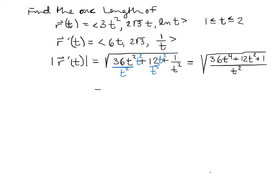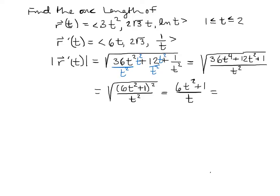The numerator is factorable — it factors as (6t² + 1)². You can check: (6t²)² = 36t⁴, 2·(6t²)·1 = 12t², and 1² = 1. So after canceling the square root with the squared factor, we get (6t² + 1)/t, which simplifies to 6t + 1/t. Now we're ready to integrate.